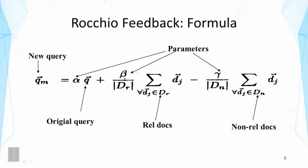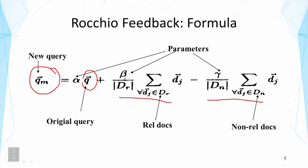After performing this operation, we get a new query vector which can be used to score documents. This new query vector reflects the movement of the original query vector toward the relevant centroid and away from the non-relevant centroid.